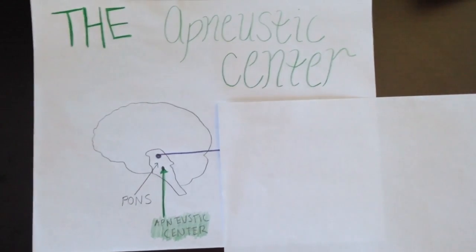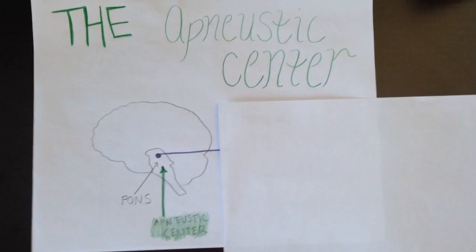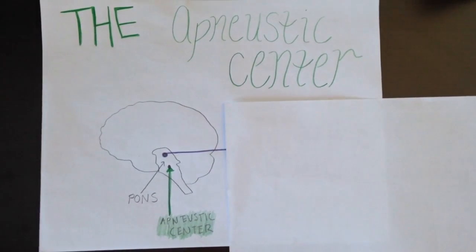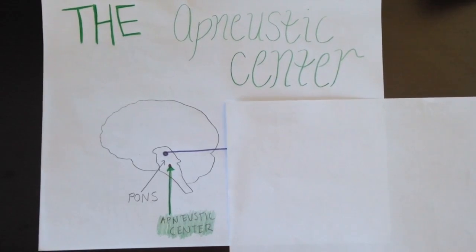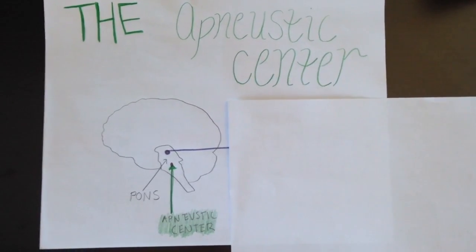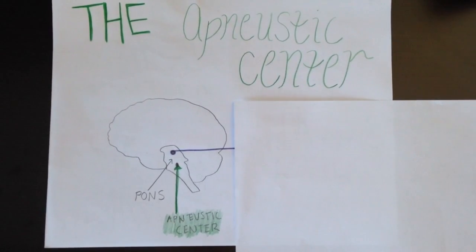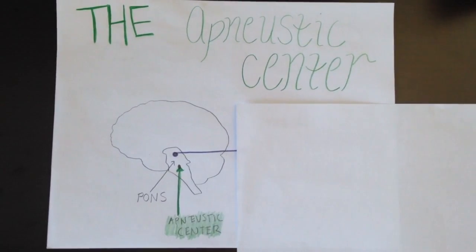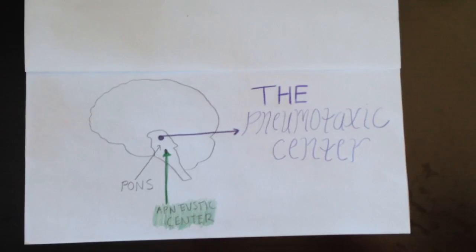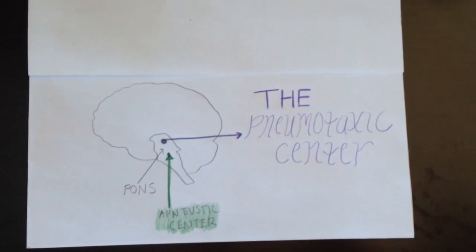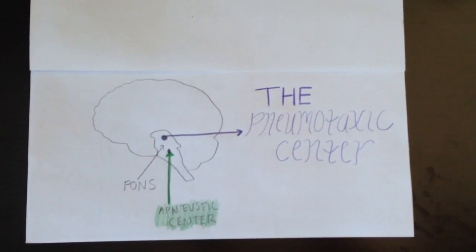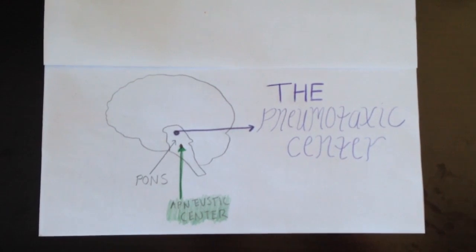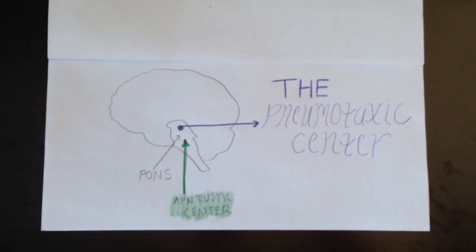The apneustic center is an area in the lower portion of the pons that controls the inspiratory phase of respiration. It promotes deep inhalation by stimulating the dorsal respiratory group. The pneumotactic center is also located in the pons and regulates the quantity of air inhaled with each breath.